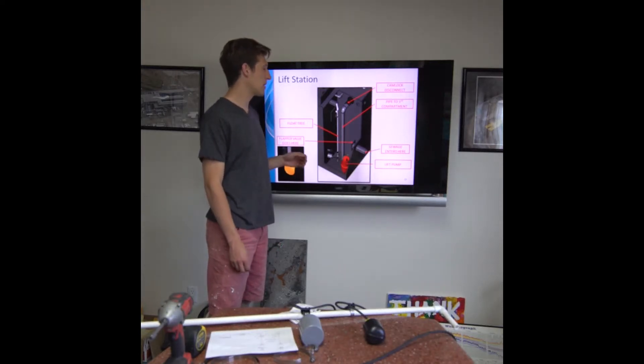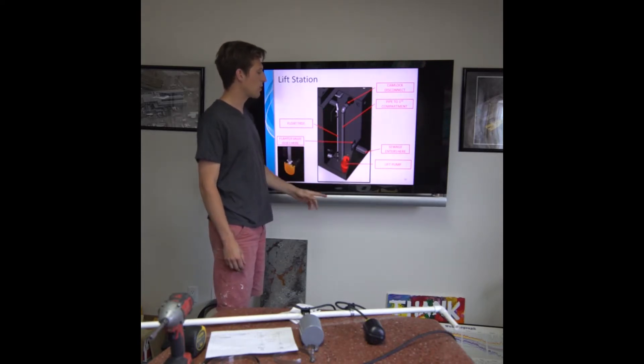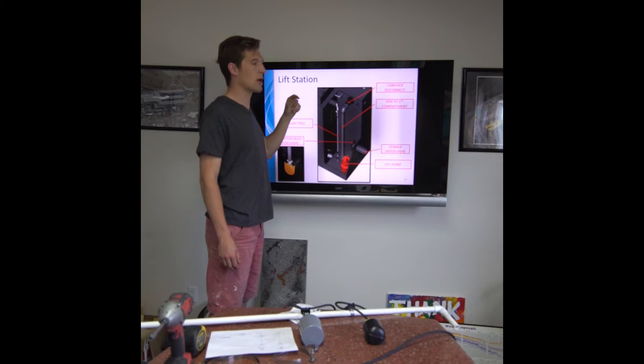The point of this video is to explain how to get rid of a float tree in the SSD 600 LS. On this picture we have the float tree over here on the left and we have the pump here on the right. This compartment is accessed through a ground port on the top of the system.